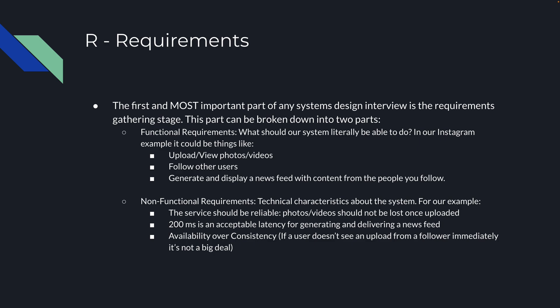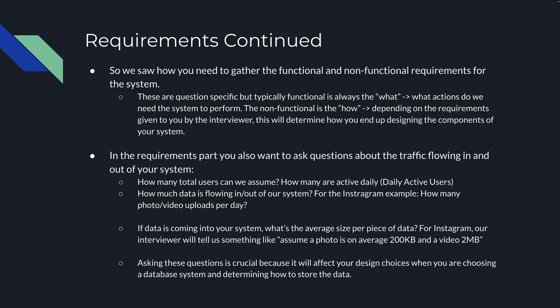We also have the non-functional requirements, which are the technical characteristics of our system. For example, our system should be highly reliable — photos and videos uploaded to Instagram should never be lost. We can also say that 200 milliseconds is an acceptable latency for generating and delivering a news feed, since waiting 10 seconds to see photos is a bad user experience. And we'd prioritize availability over consistency — if a user doesn't see an upload from a follower immediately, it's not a big deal.